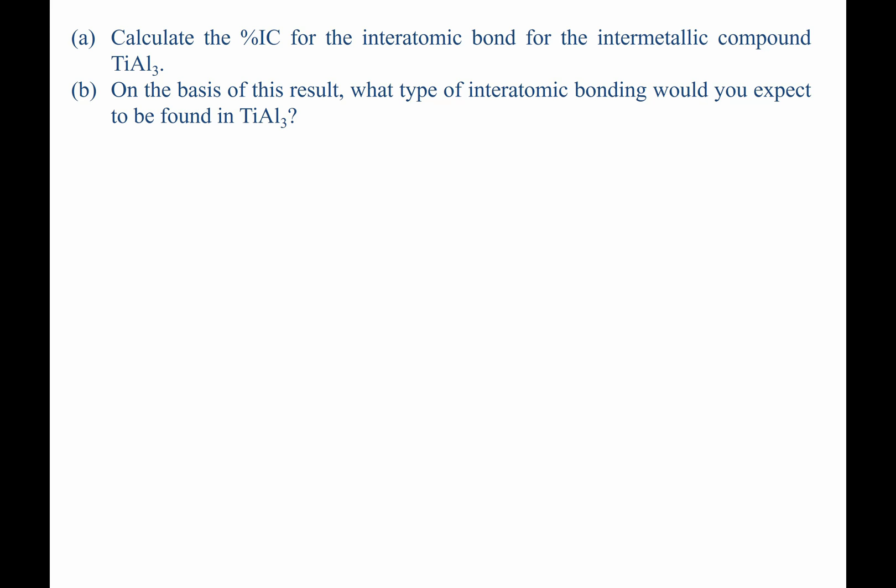We are asked to calculate the percent ionic character for the interatomic bond for the intermetallic compound TiAl3. In Part B, this is based on the result of Part A, to now determine what type of interatomic bonding we might expect to be found in TiAl3.